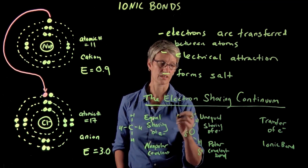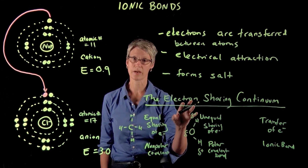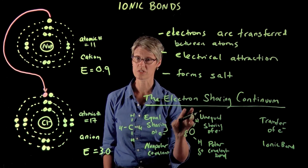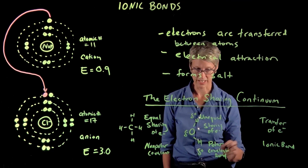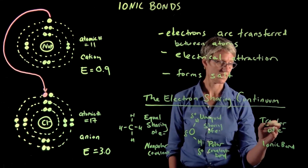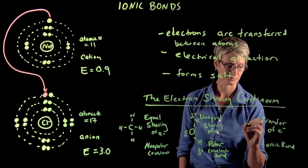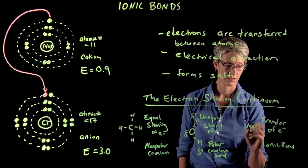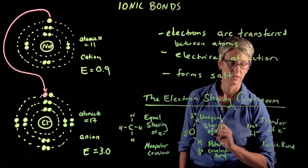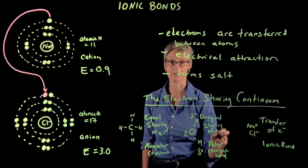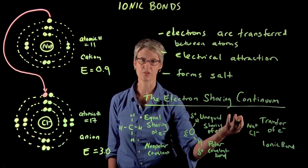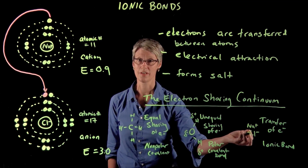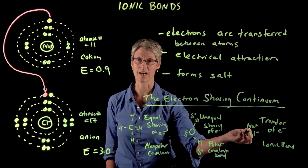When you have polar covalent bonds, you wind up with a molecule that has regions of partial charge. In the case of an ionic bond, like sodium chloride, you actually have fully charged atoms bearing a full charge that are attracted to each other because of their opposite charges.